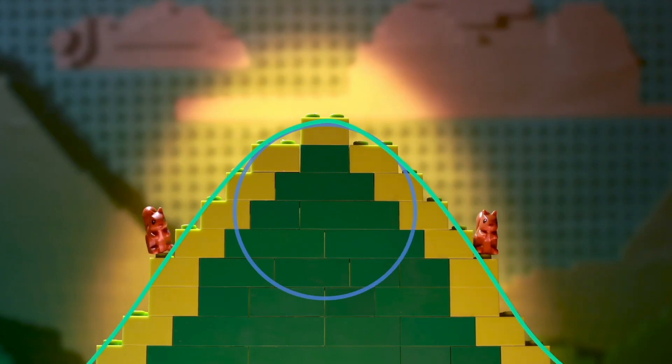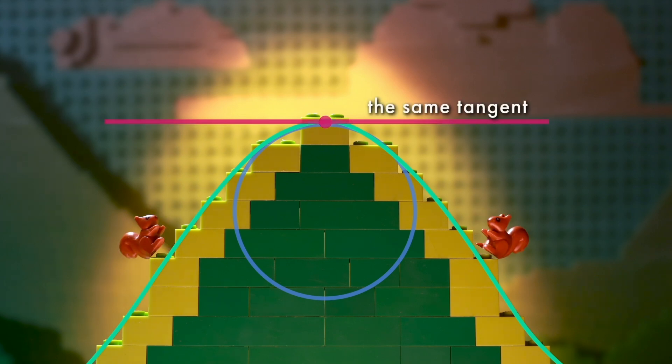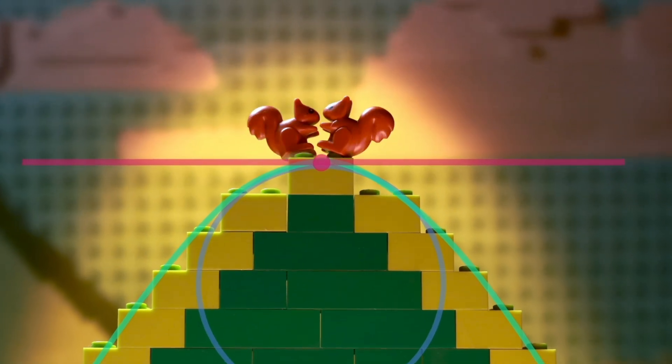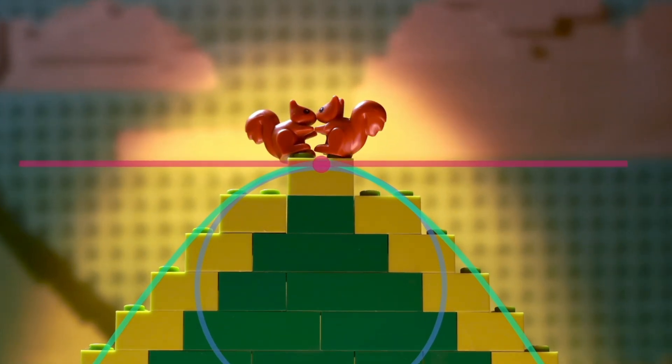A circle that osculates the curve just touches the curve at a point, and at that point the curve and the circle have the same tangent. Osculate also means kiss, so the circle whose radius gives a radius of curvature just kisses the curve.